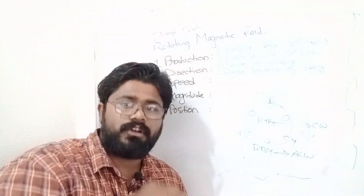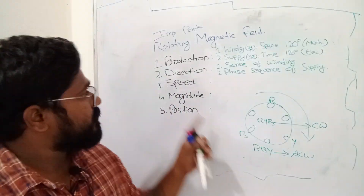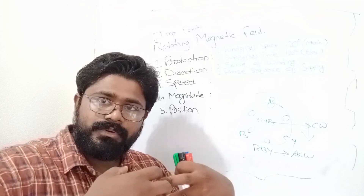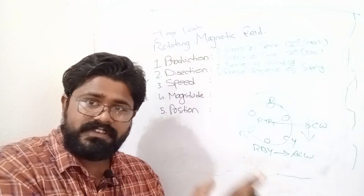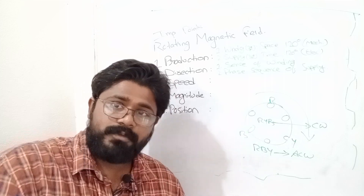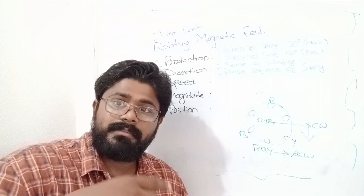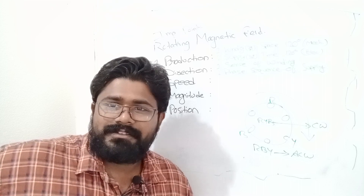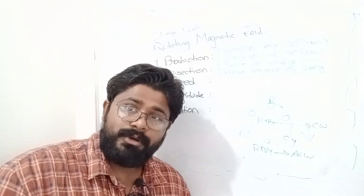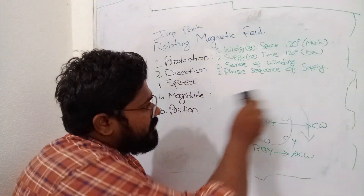The direction of the rotating magnetic field is dependent on the sense of winding and the phase sequence of the supply. RYB corresponds to clockwise and RBY corresponds to anti-clockwise direction. If we already have a machine constructed, we can change the sense of winding. Since those are just wires, we can also change the supply connection to reverse the direction of rotation.